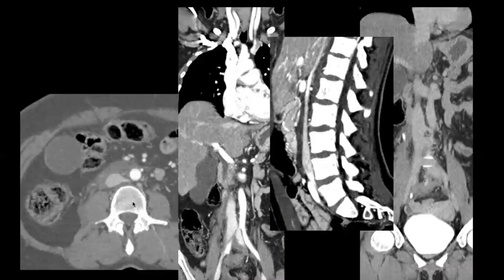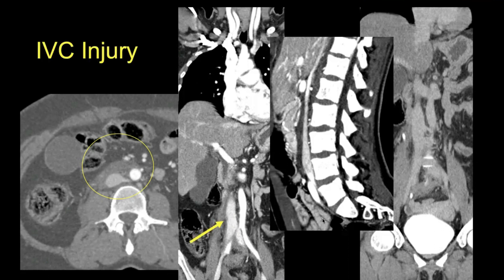Another example, a little bit more subtle: there is retroperitoneal stranding surrounding the IVC. Note a slight irregularity of the IVC on the right side and anteriorly, as well as mild thickening of the IVC wall. This surgically-proven injury did not require repair.